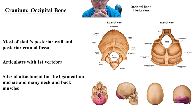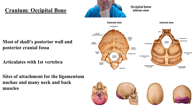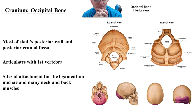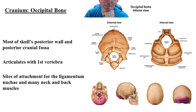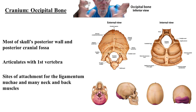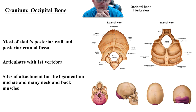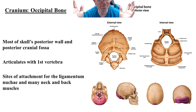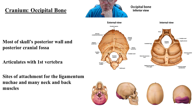The occipital bone makes up most of the posterior portion. You can see those nuchal lines, and this big hole is called the foramen magnum — that's where the spinal cord comes out from the brain. The occipital condyles are going to attach to the first vertebra, which is your backbone, and that's what the head sits on. The ligamentum nuchae are ligaments that help hold the bones together.